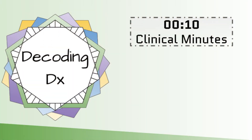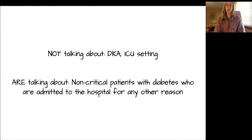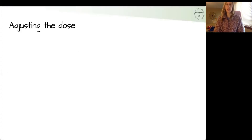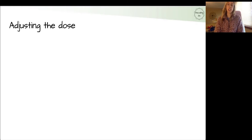Let's get to the episode. Welcome back to 10 Clinical Minutes. Today we have part two of our two-part insulin in the hospital series. Quick reminder: this presentation is not about DKA or critical care settings. We are talking about non-critically ill patients who have diabetes and are admitted to the hospital for any other reason. In the previous video, we talked about how to decide what dose to start for your patients on admission, whether they had a previous outpatient insulin regimen or not.